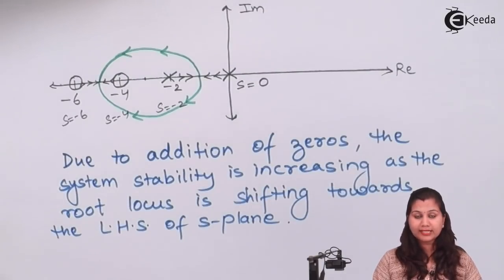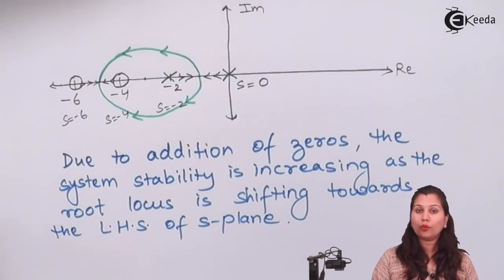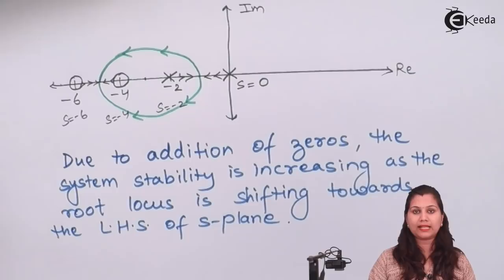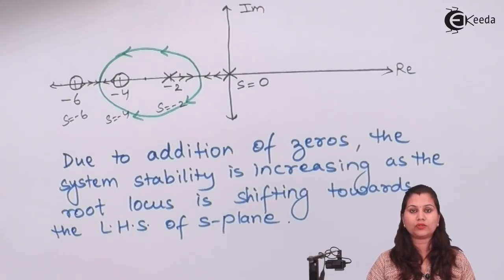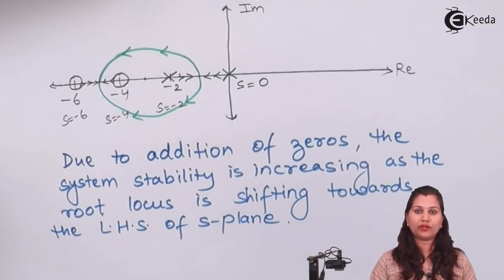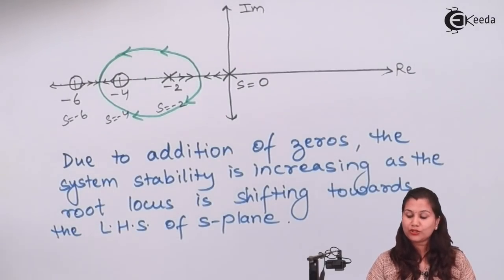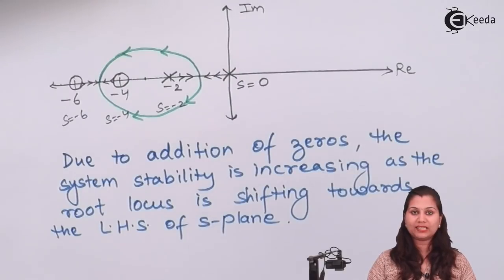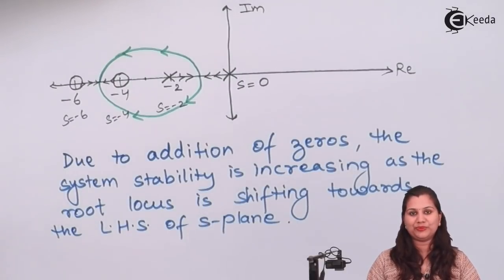So this is the effect of addition of open loop poles and zeros on the location of the root locus. I hope that this video is clear to you. Thank you.